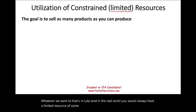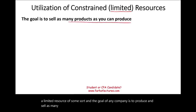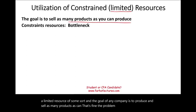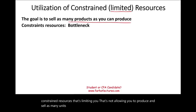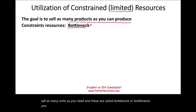The goal of any company is to produce and sell as many products as they can. The problem is you might have constrained resources that are limiting you, not allowing you to produce and sell as many units as you need. These are called bottlenecks — you could have more than one bottleneck.